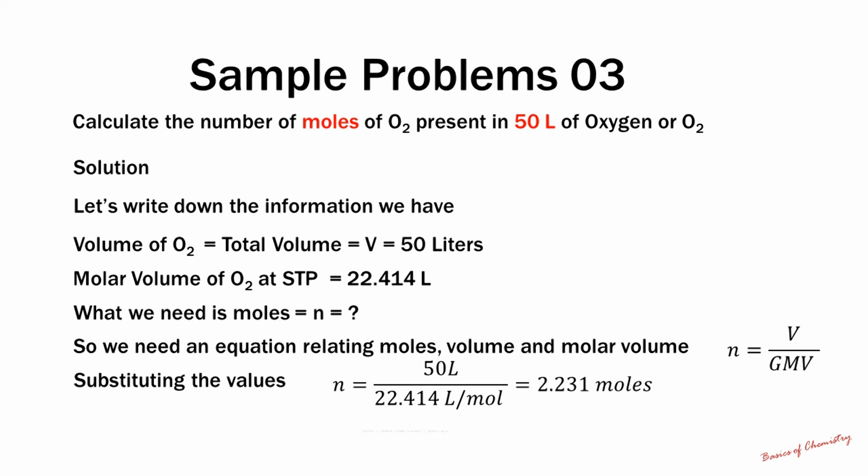There are 2.231 moles of diatomic oxygen present in 50 liters of diatomic oxygen at STP. These are the 3 basic problems involving moles, mass, number, and volume. In the videos that follow in this series on moles, I will show you how to convert moles to mass, mass to moles, count atoms, molecules, and determine the mass of atoms and molecules.